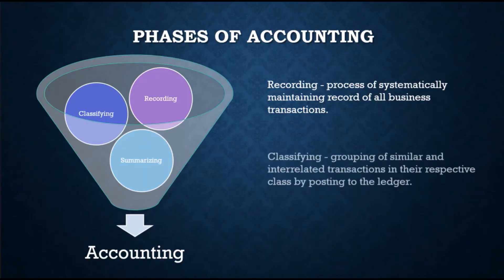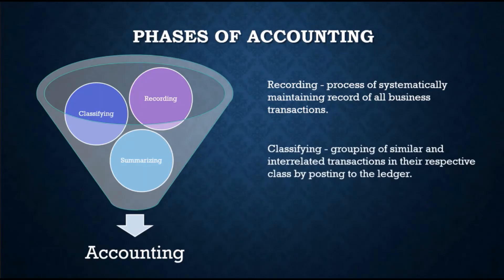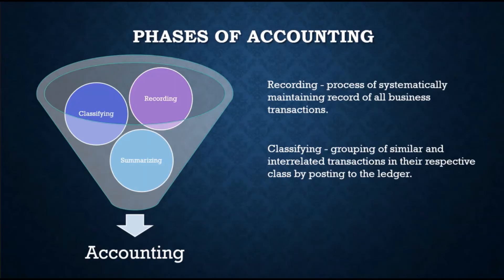The next phase is classifying. Classifying is the grouping of similar and interrelated transactions in their respective class by posting to the ledger. For example, all transactions involving cash are grouped in a single cash account. This is usually accomplished by posting the journal entries to the general ledger.